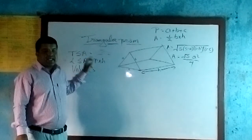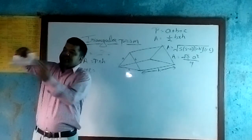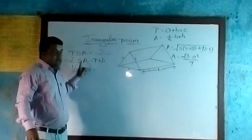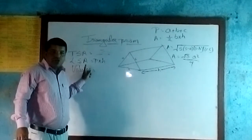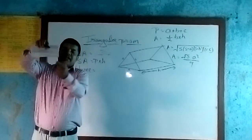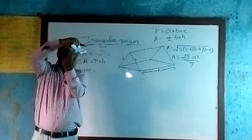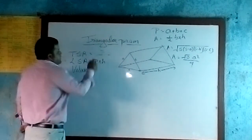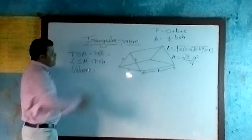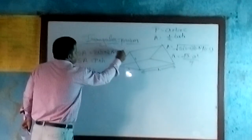If you want to find the total surface area of the triangular prism, you have to add the area of the two triangles to the lateral surface area. Total surface area means all the area of the triangular prism: lateral surface area plus the area of this triangle plus the area of this triangle. So the formula of total surface area is perimeter multiplied by height, plus two times the area of the triangle.